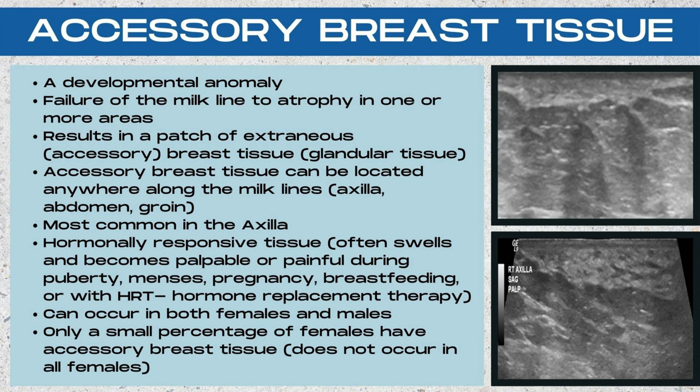This tissue is hormonally responsive, so it often will swell and become palpable or painful during puberty, menses, pregnancy, breastfeeding, or when taking HRT (hormone replacement therapy). It's important to understand that this can occur in both males and females, and that only a small percentage of females or males have accessory breast tissue — this does not occur in everyone.